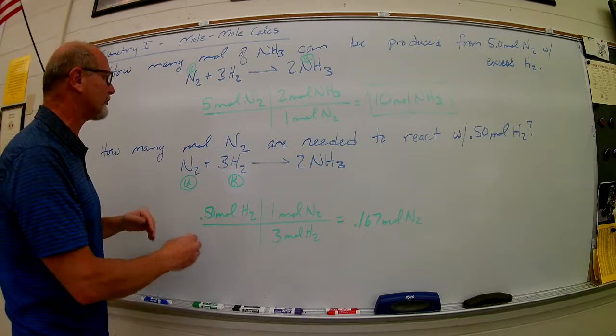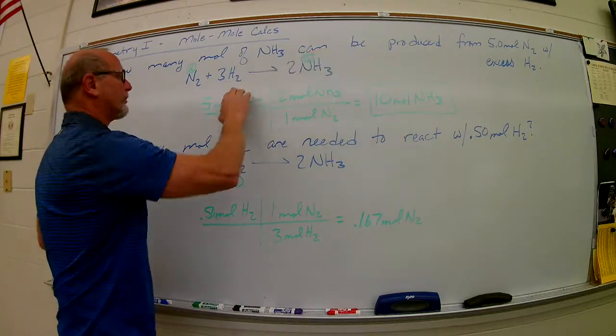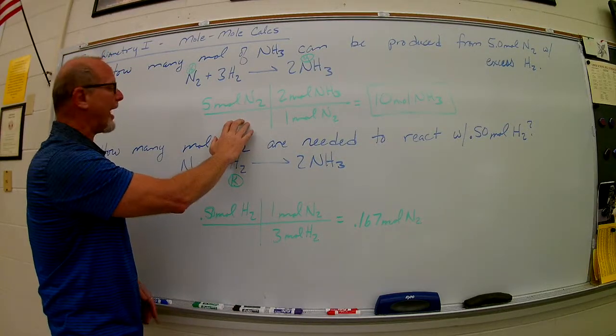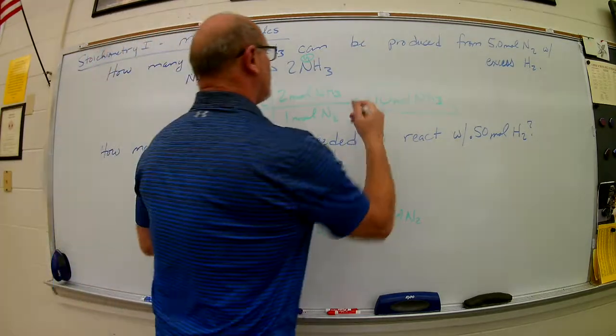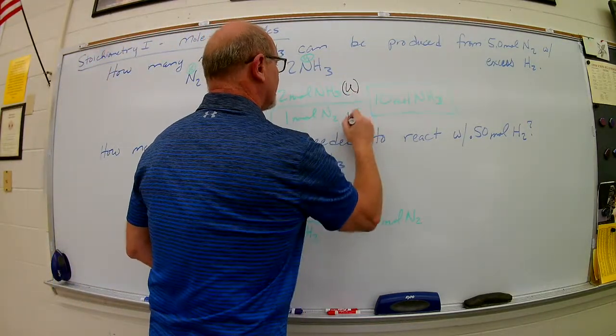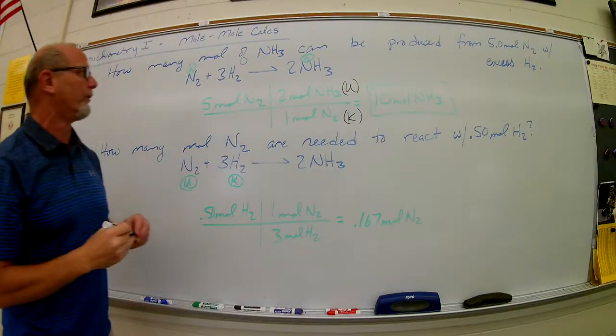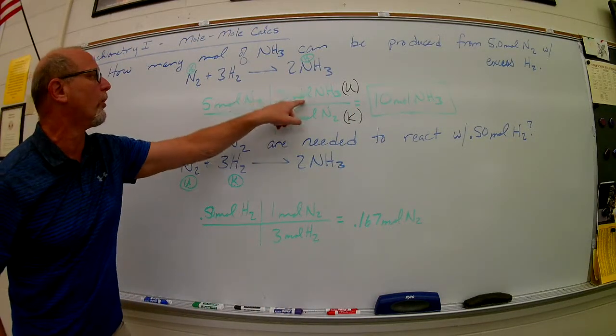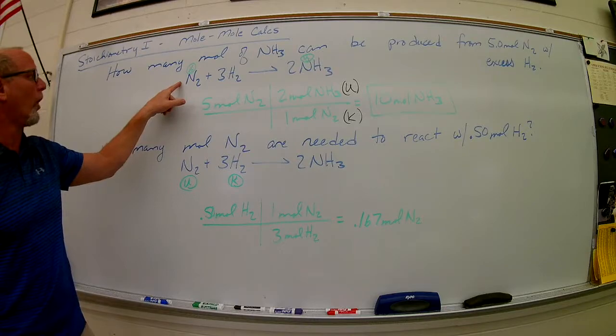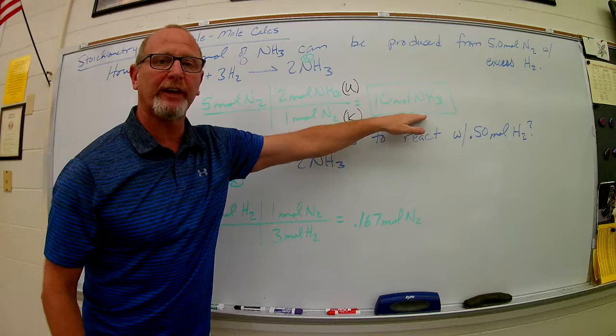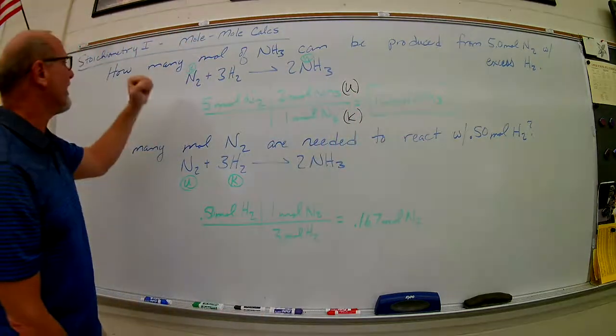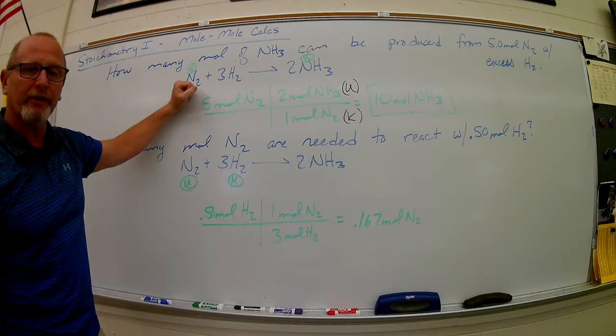Now the setup for this is real easy. Start with the number you're given. Nothing goes on the bottom. Then set up a ratio here. That ratio is simply your unknown coefficient over your known coefficient. So I use 2 moles NH3 for 1 mole N2. 5 times 2 gives me 10 moles of NH3. That's how much I can produce given 5 moles of this stuff.